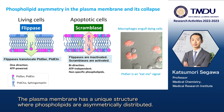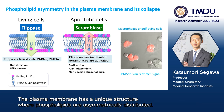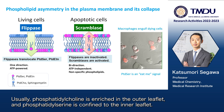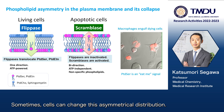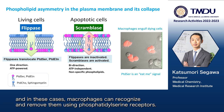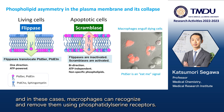The plasma membrane has a unique structure, where phospholipids are asymmetrically distributed. Usually, phosphatidylcholine is enriched in the outer leaflet, and phosphatidylserine is confined to the inner leaflet. Sometimes cells can change this asymmetrical distribution. Dying cells show phosphatidylserine on the cell surface, and in these cases, macrophages can recognize and remove them using phosphatidylserine receptors.